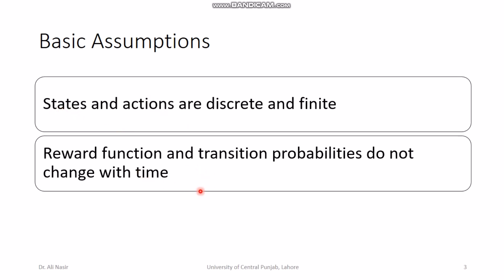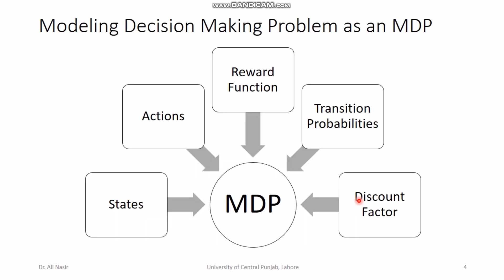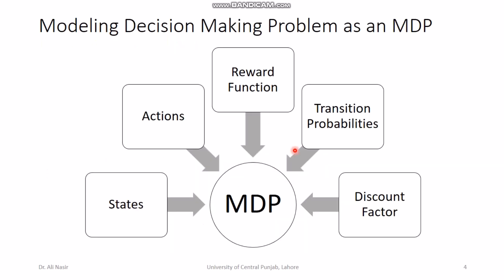This assumption can be relaxed if you are dealing with finite horizon Markov processes. In coming lectures I will have a separate lecture on the difference between finite horizon and infinite horizon Markov processes, and how you can have reward functions and transition probabilities varying with time and still solve the problem. For now, we stick to fixed reward and fixed probability functions, and each variable takes on integer values for simplicity.